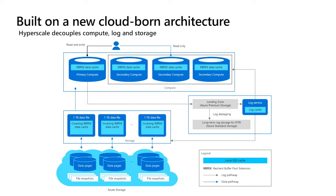Then there's the log service, which takes the transaction log. The compute nodes write directly to Azure Premium Storage, so it's highly durable as soon as it hits that storage, and we can finish the transaction at that point. The log service then takes data out of that landing zone and forwards it into long-term storage, and also takes the updates in that log stream and reflects them to the other replicas — the read-only replicas — so they can update their pages, as well as the page servers, which are the ultimate storage for the data.